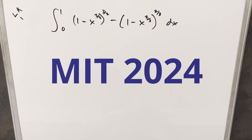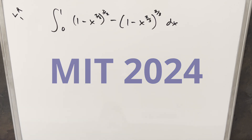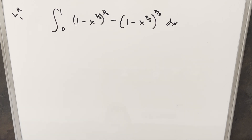We have here another integral from the MIT Integration Week 2024, lightning round number one. We have the integral from zero to one of (1 minus x)^(3/2) all to the three halves, minus (1 minus x)^(2/3) all to the two-thirds, dx.